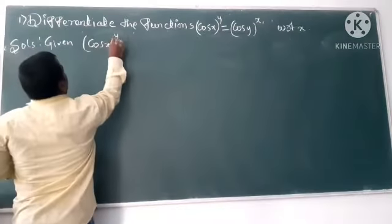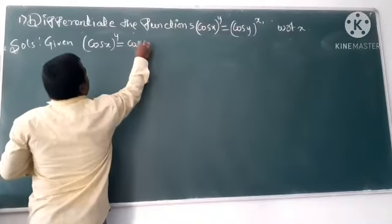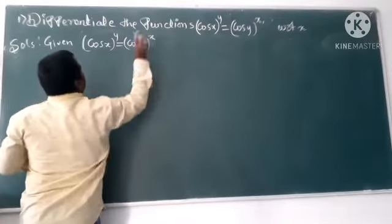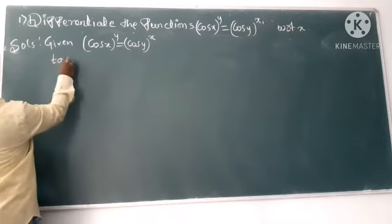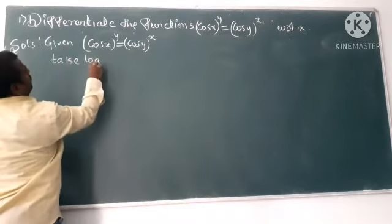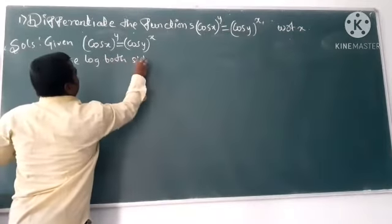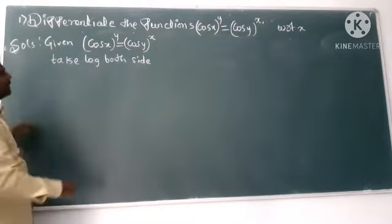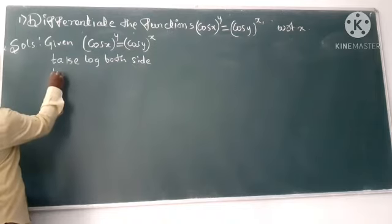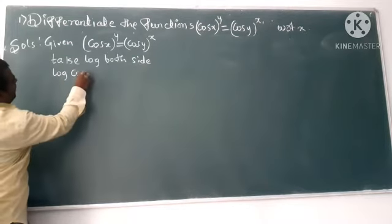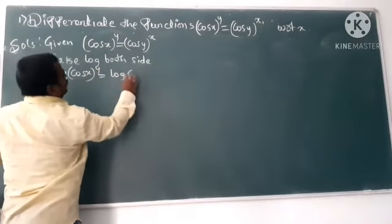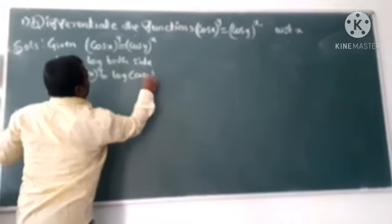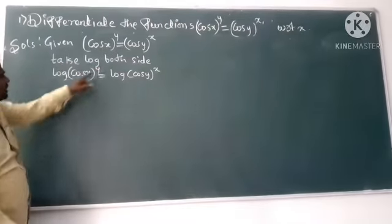So consider this problem: (cos x)^y = (cos y)^x. We'll take log both sides. Log of (cos x)^y = log of (cos y)^x.